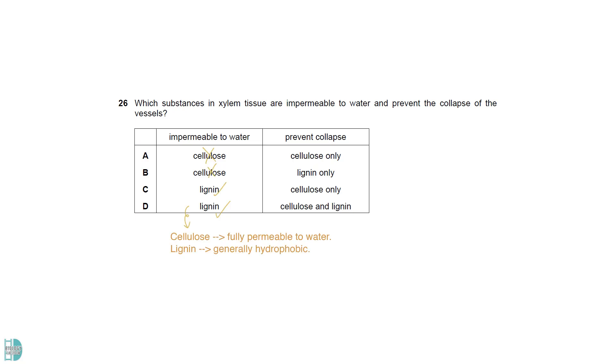Cellulose is fully permeable to water, while lignin is generally hydrophobic. Both provide great tensile strength. They provide mechanical support, preventing the cell wall from collapsing under pressure.